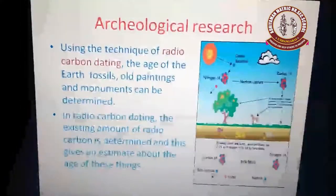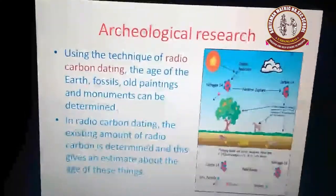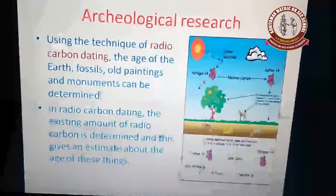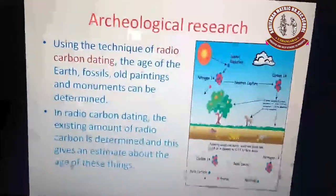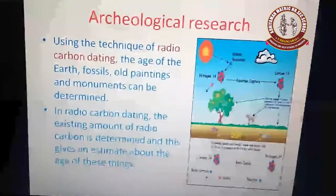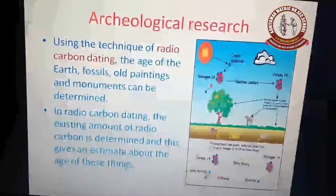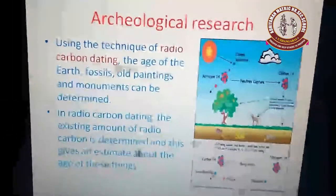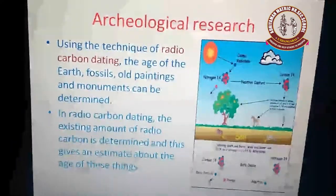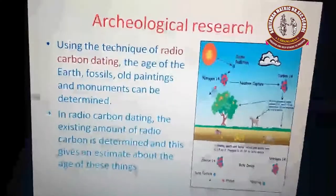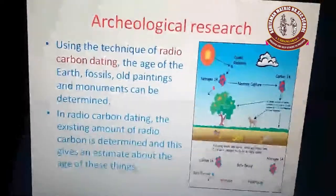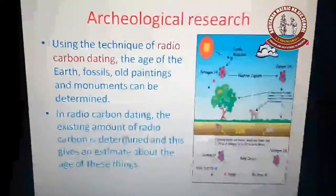In archaeological research, the technique of radio carbon dating is used. Radio carbon dating uses isotopes of carbon-14. Using carbon-14, we can estimate the age of fossils, old paintings, and monuments. The amount of carbon-14 remaining in a substance tells us how long ago it was alive, making it easy to find out the age of ancient materials. This is an important technique in archaeological research.